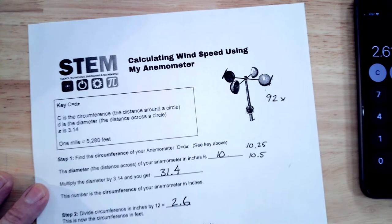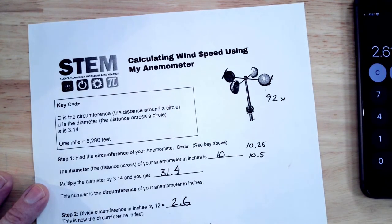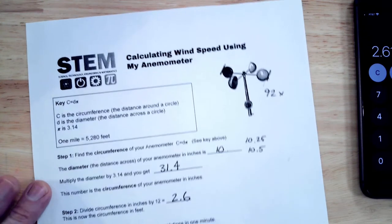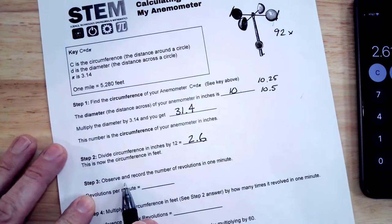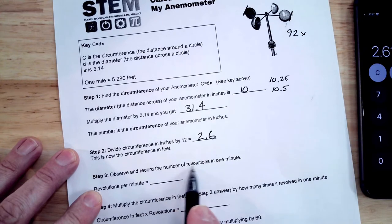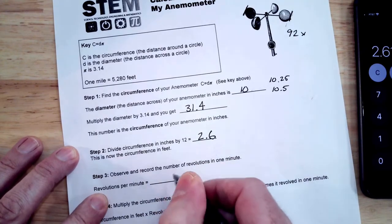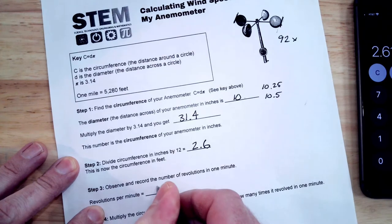So now we're going to go back here. Observe and record the number of revolutions, so again it was, we're just going to use 92. It spun around 92 times in 60 seconds.